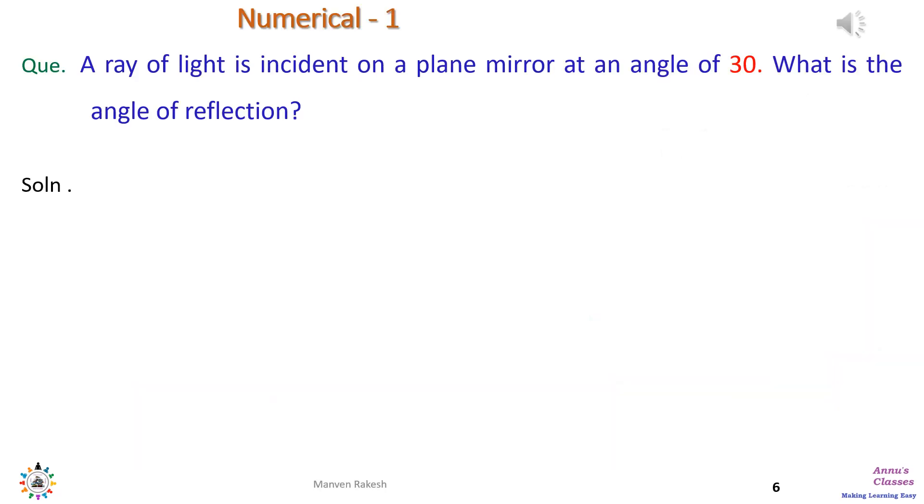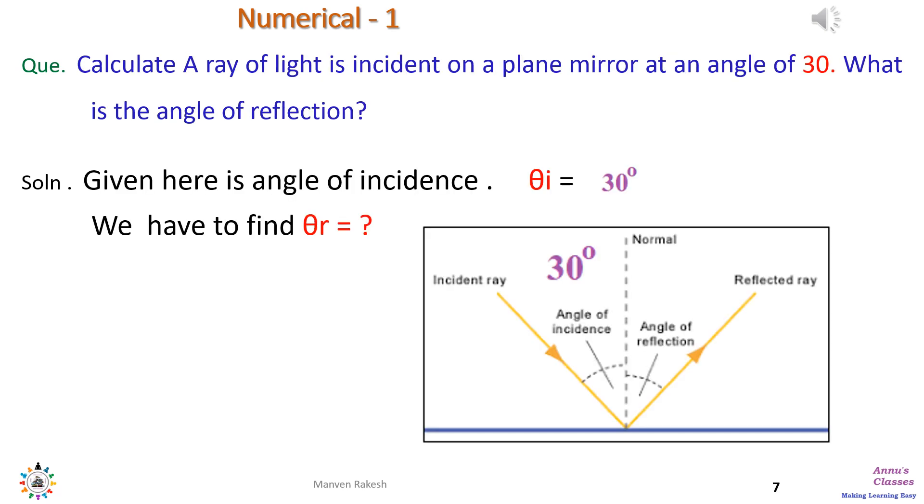To understand the fundamentals, now let us solve a numerical problem. The problem given here is: a ray of light is incident on a plane mirror at an angle of 30 degrees. What is the angle of reflection? Given here is angle of incidence θi, see the figure.